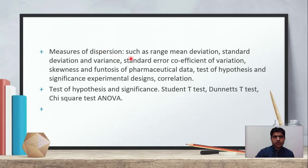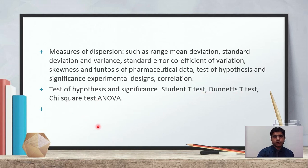Biostatistics also covers measures of dispersion such as range, mean deviation, standard deviation and variance, standard error, coefficient of variance, skewness and kurtosis of pharmaceutical data, test of hypothesis and significance of experimental designs, correlation, Student t-test, ANOVA, and chi-square test.